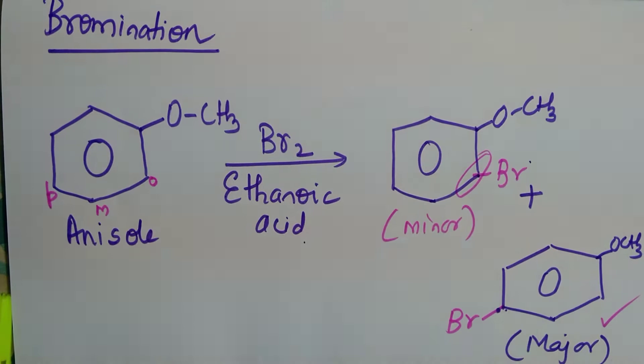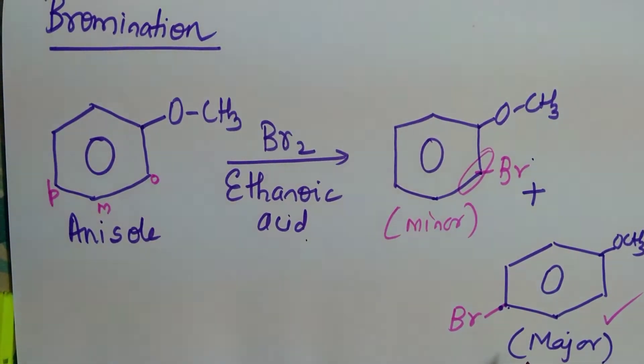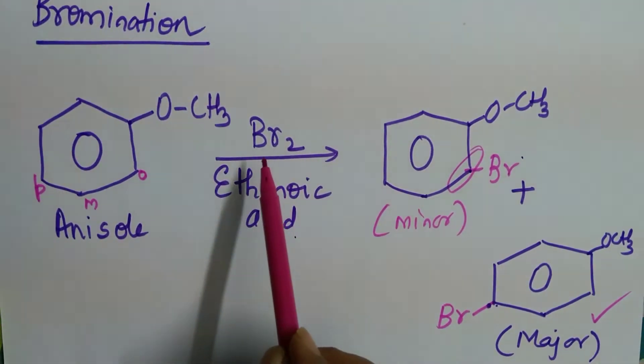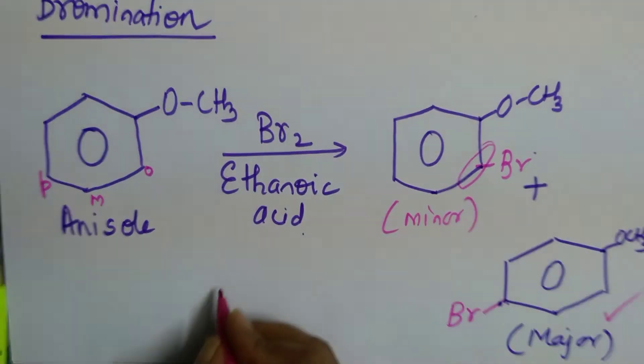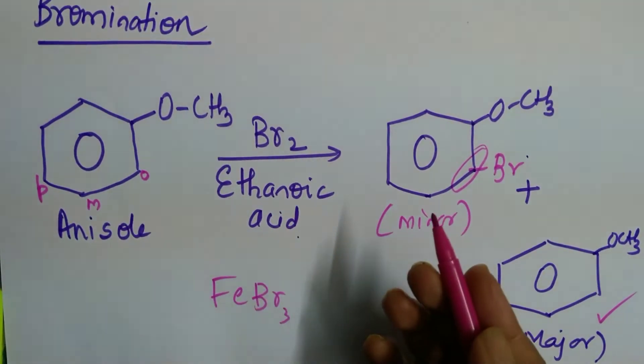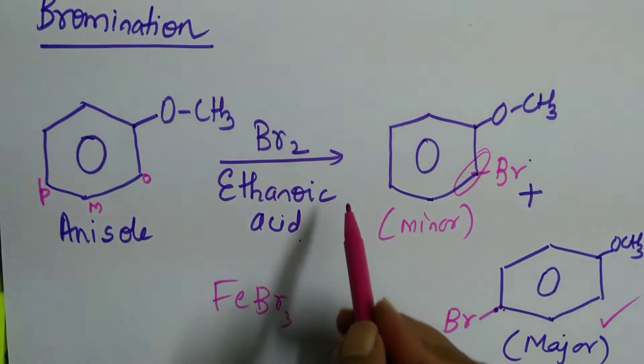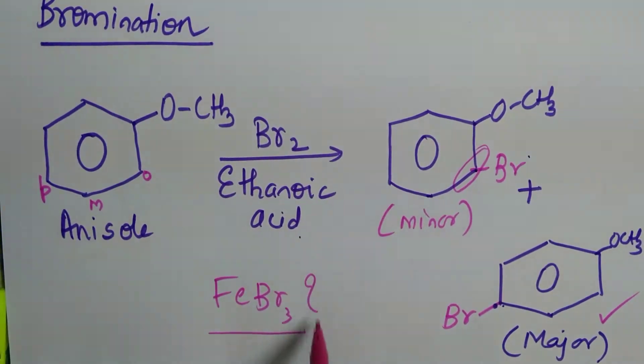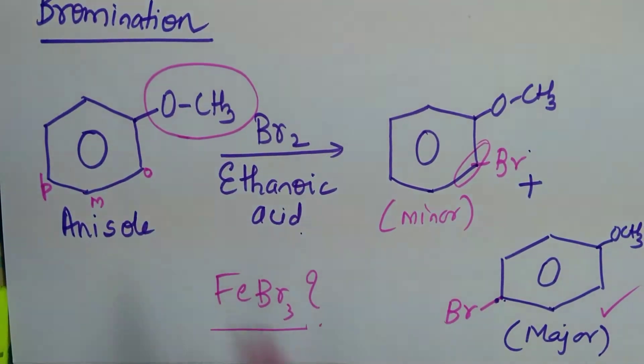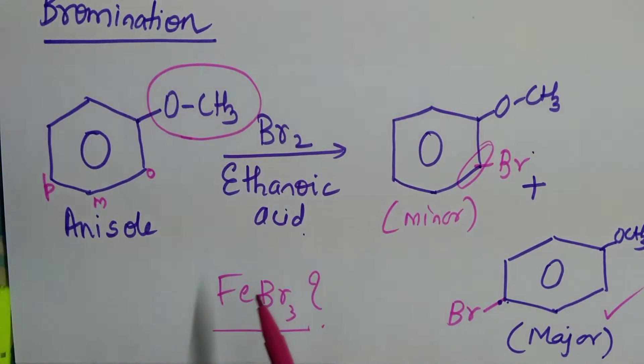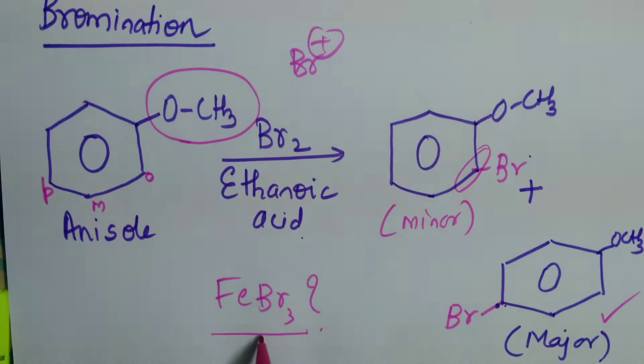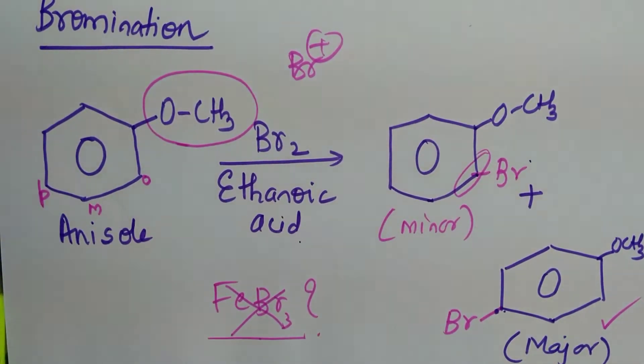Para-bromoanisole is obtained as the major product. One more doubt we have here. Whenever we go for chlorination or bromination, we use FeBr3. For chlorination we use FeCl3. Now, in this case why are we not using FeBr3? It is because OCH3 group is a very active group. As a result it helps in generation of bromonium ion by itself. Therefore, there is no need of using this particular molecule.